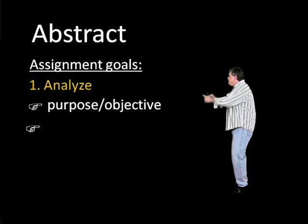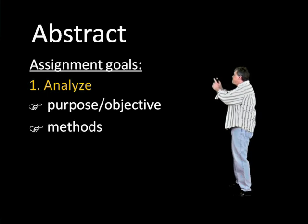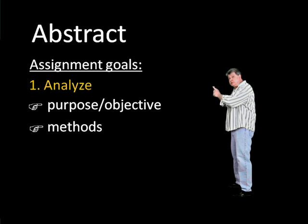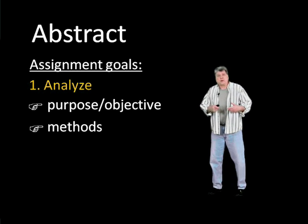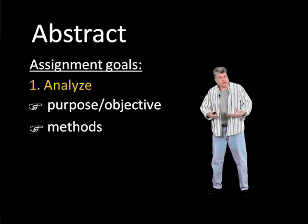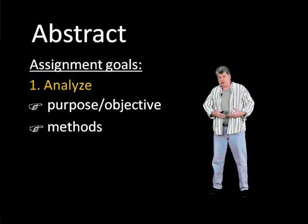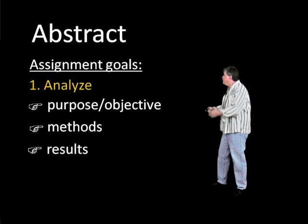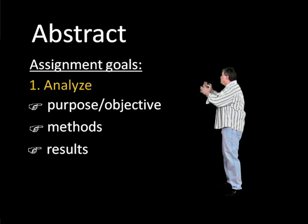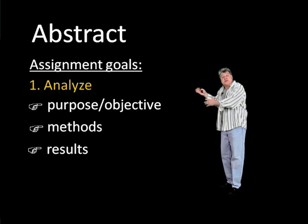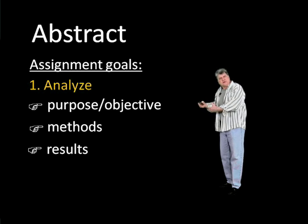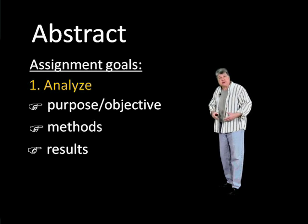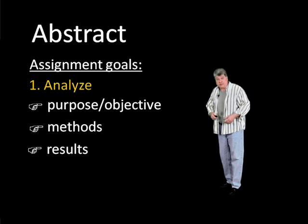The next thing you're going to be looking for is the methods that that scholar used to study his or her subject, or perhaps the experimental methods that the experimenter used to conduct the experiment. The third thing you're going to look for is the results — what did that scholar find when he or she studied? What did that researcher find when he or she conducted that experiment?